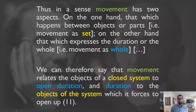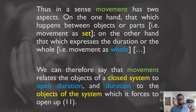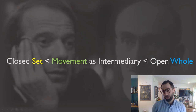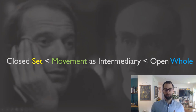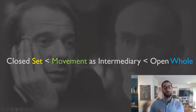We have three terms — whole, set, and movement — and Deleuze explains how they relate. He says movement has two aspects: on one hand, that which happens between objects or parts, that is movement as set; on the other hand, that which expresses the duration or the whole, that is movement as transformation of the whole. Movement relates the objects of a closed system to open duration, and duration to the objects of the system, forcing them to open up.